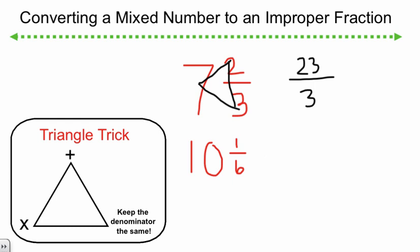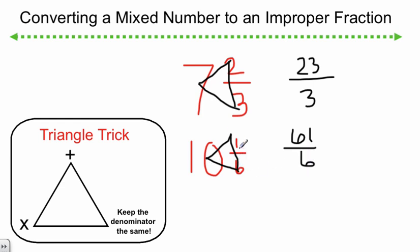Let's do another problem: 10 and 1 sixth. Like always with the triangle, we're going to start in the denominator and go around making a triangle. Starting with the 6, we're going to multiply by the 10 — notice we multiply first. 6 times 10 is 60. Then we're going to add in the numerator: 60 plus 1 is 61. And we come back down into the denominator, and it stays the same. So we've quickly changed our mixed number into an improper fraction.